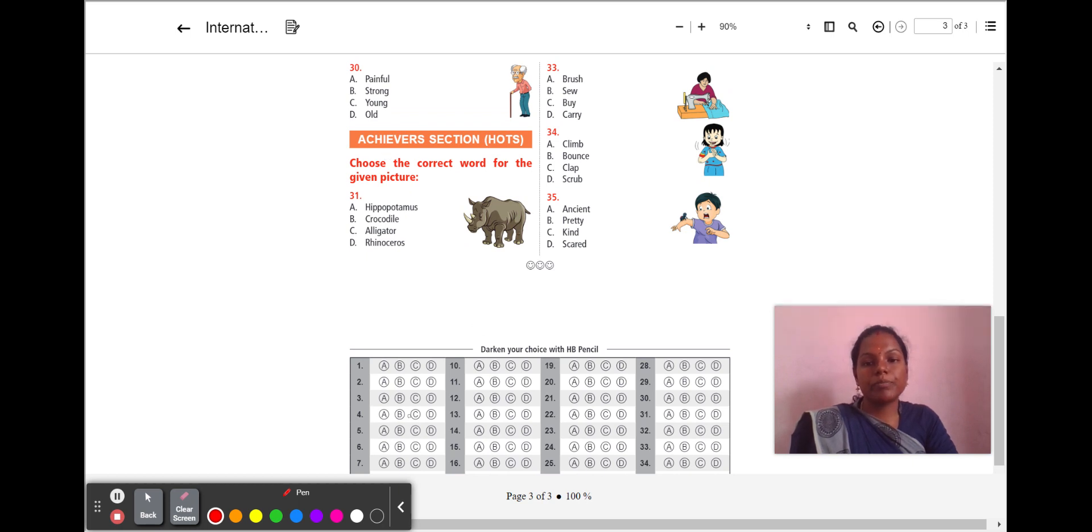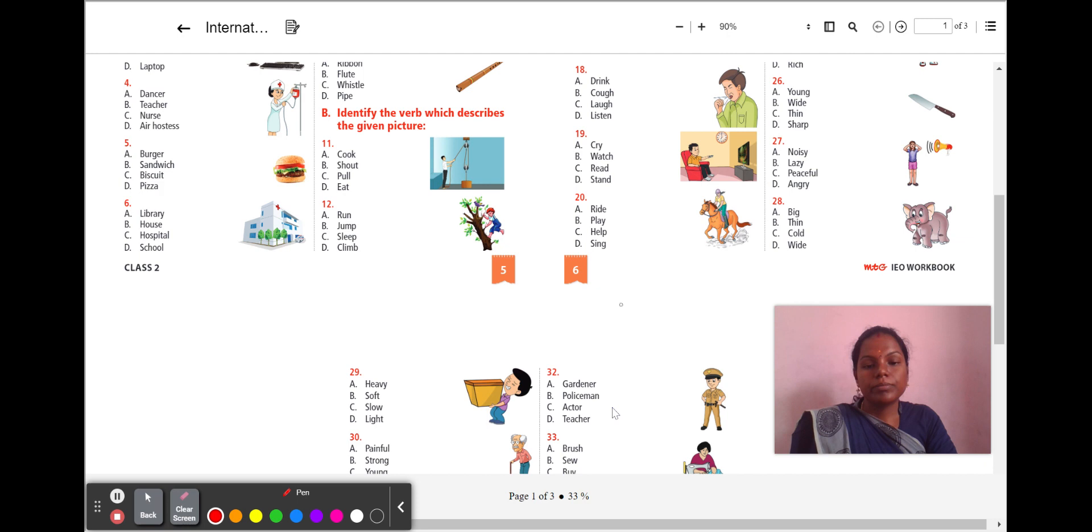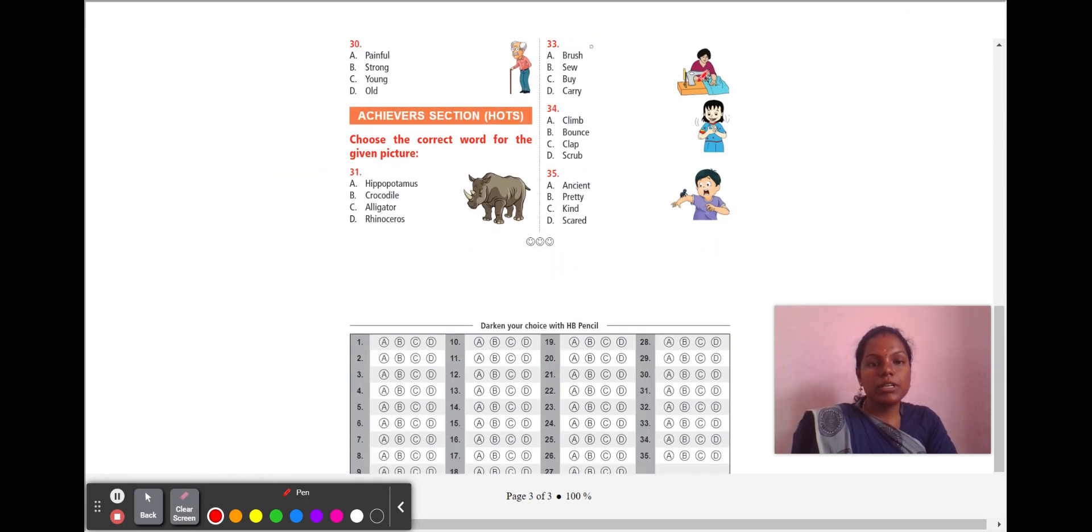Next, achievers section. Choose the correct word for the given picture. Look at this man. What profession is he? A, gardener. B, policeman. C, actor. D, teacher. And the profession he is B, policeman. Next, 32nd question. A woman is stitching her clothes. What work is she doing? A, brush. B, sew. C, buy. D, carry. A woman is sewing. The answer is B, sew.